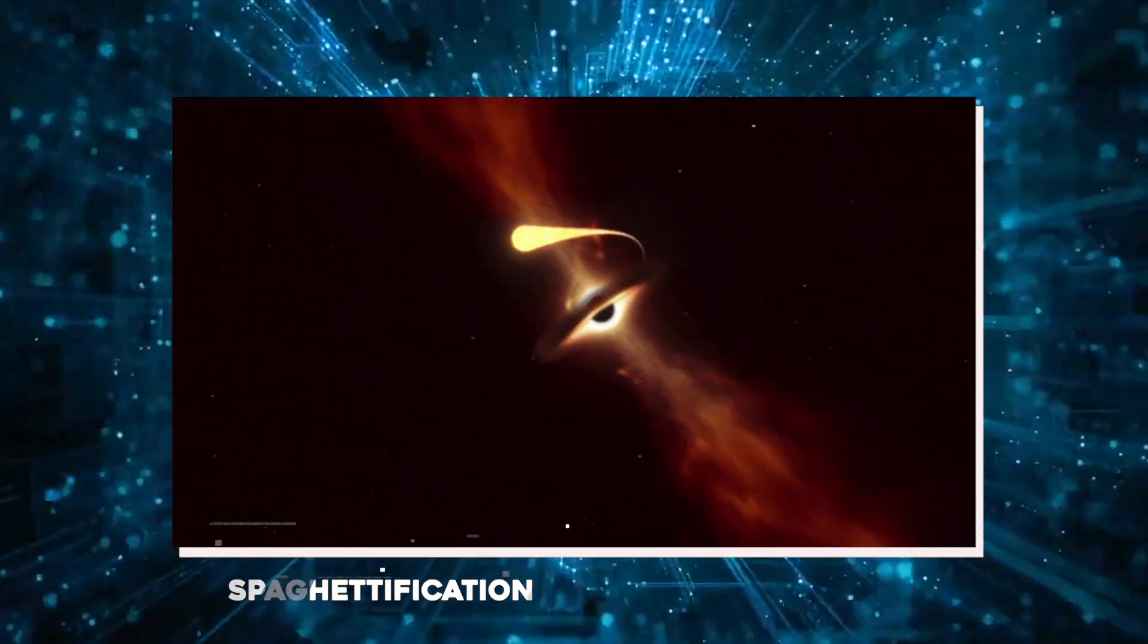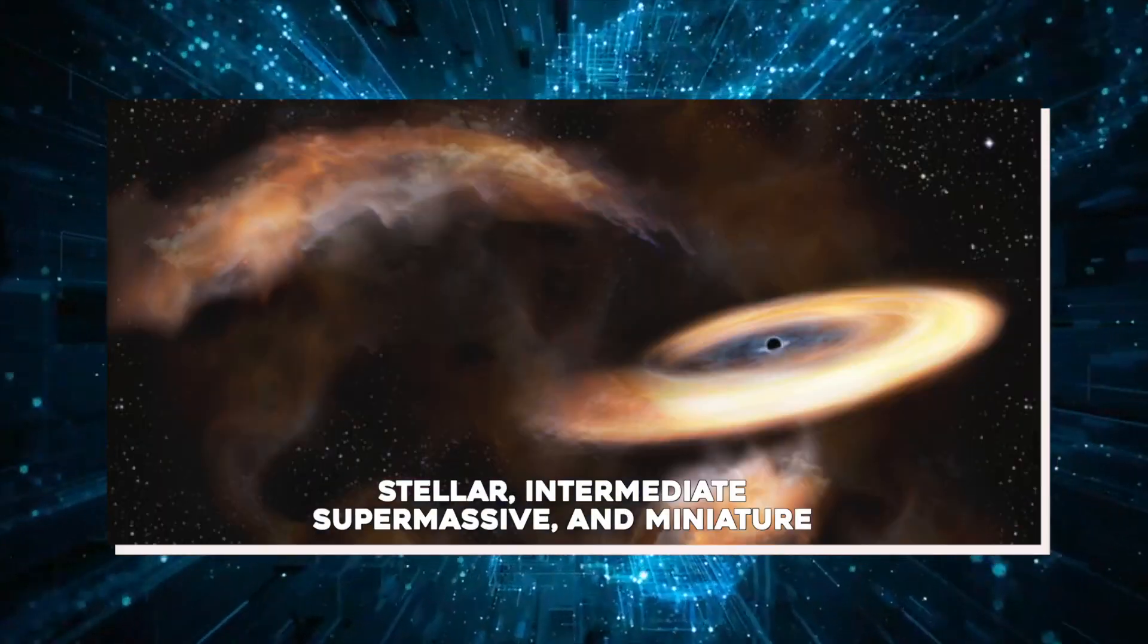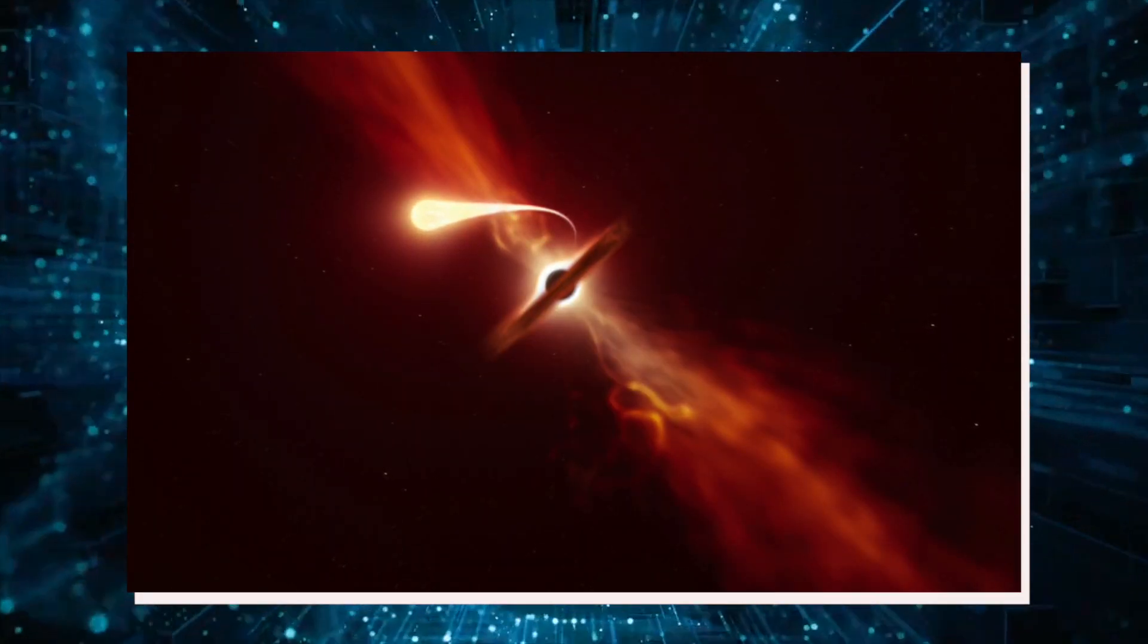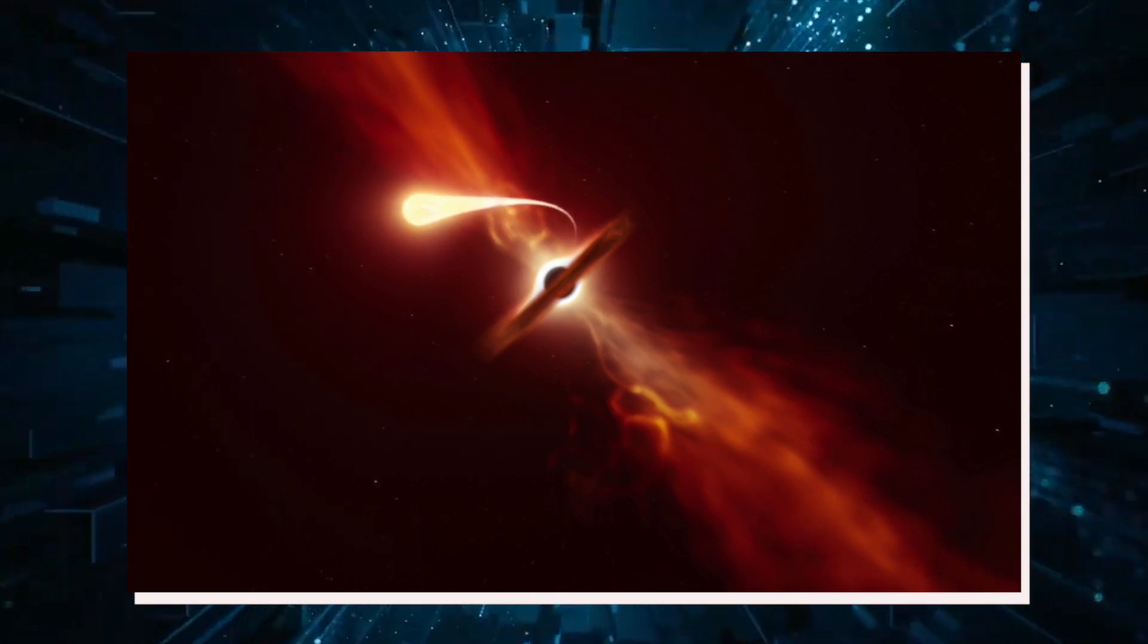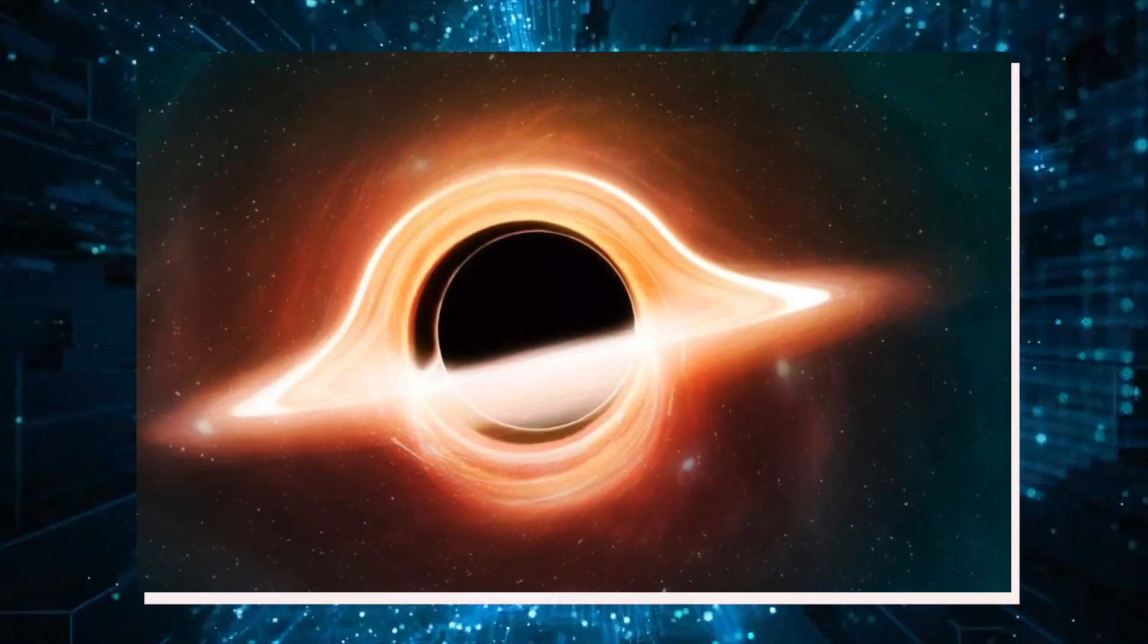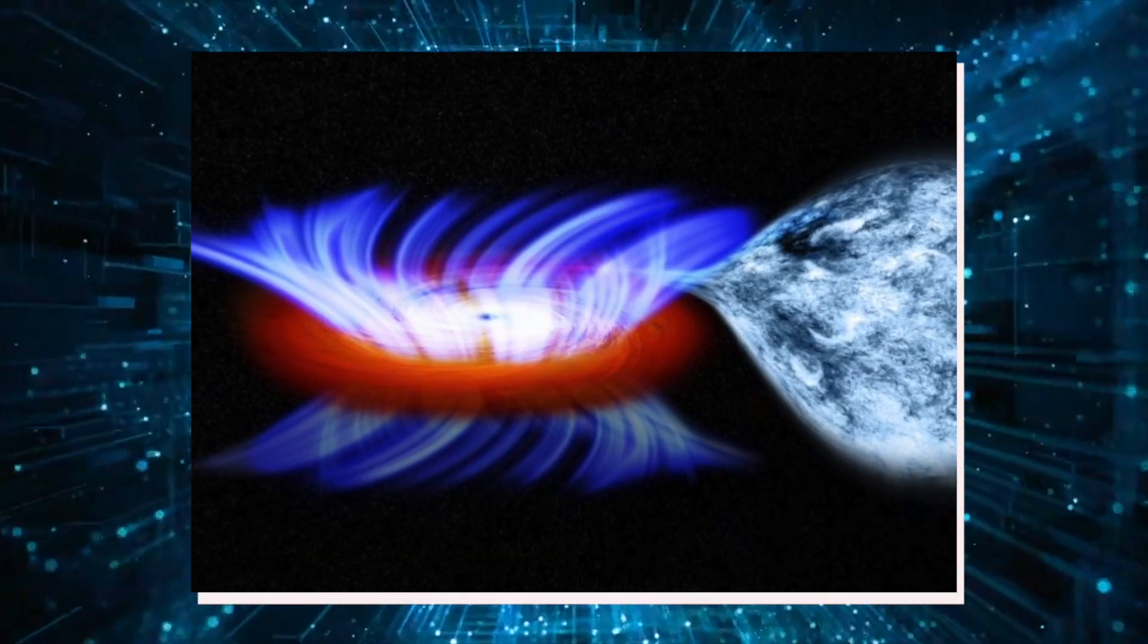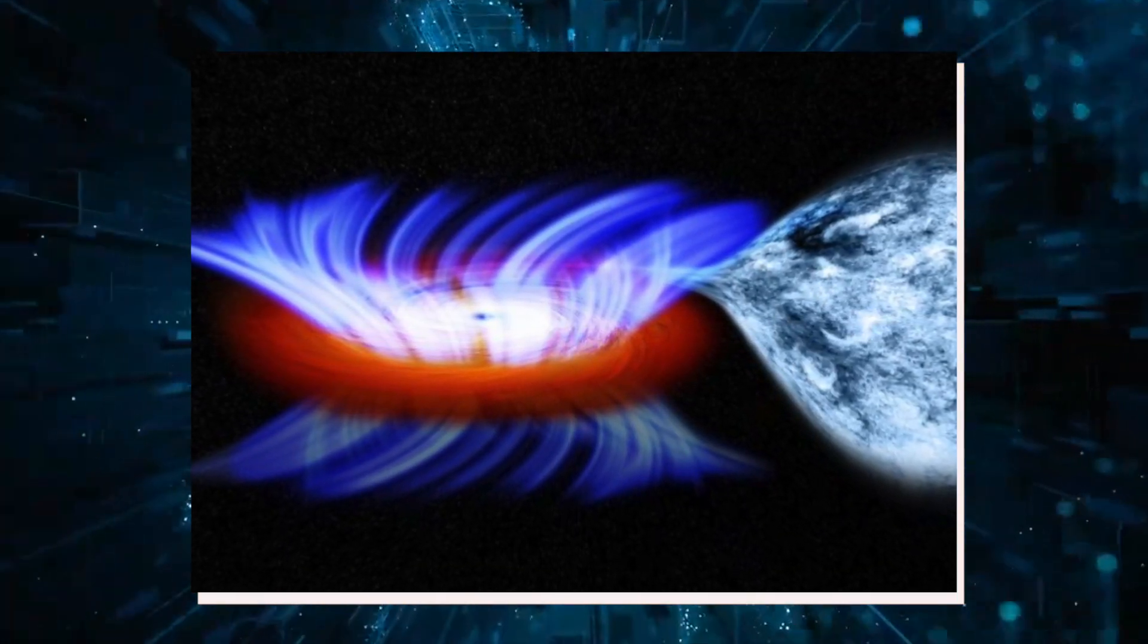There are four types of black holes: stellar, intermediate, supermassive, and miniature. The most commonly known way a black hole forms is by stellar death. As stars reach the end of their lives, most will inflate, lose mass, and then cool to form white dwarfs.